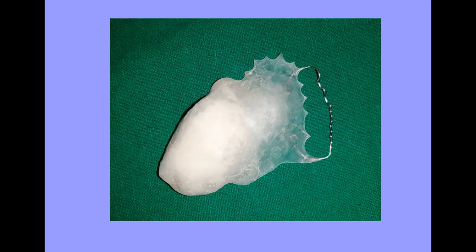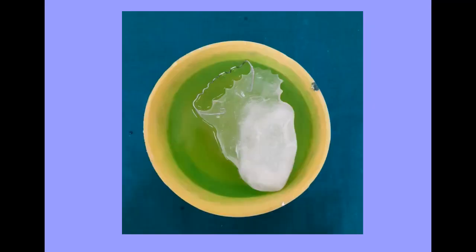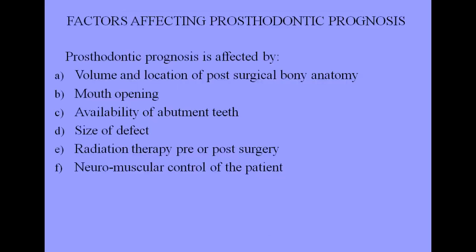After resection of the mandible as well as the maxilla, there is trismus due to the surgery. For this purpose, you have to use certain measures like an exercise program or physiotherapy so that mouth opening can be improved over a period of time. Then an impression can be made to fabricate the obturator. This hollow bulb obturator was fabricated — the hollowness makes it lighter and more acceptable. Once the patient gets accustomed to this prosthesis, we can add a guide flange to it.